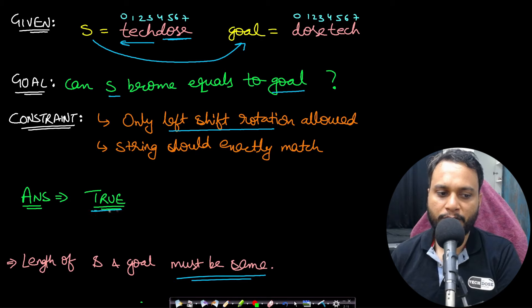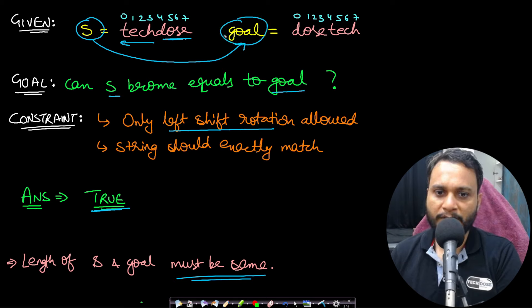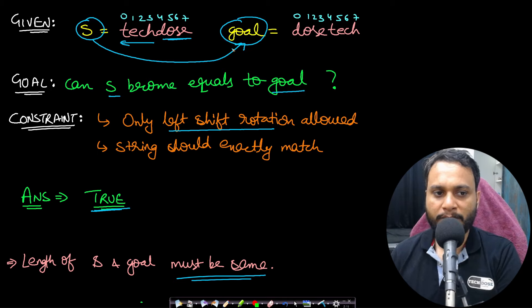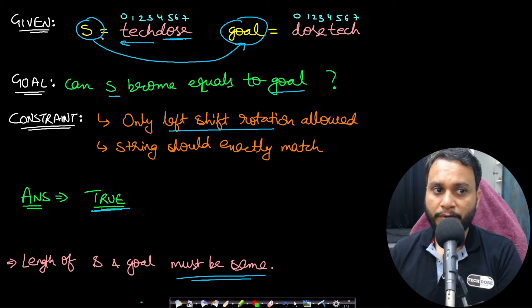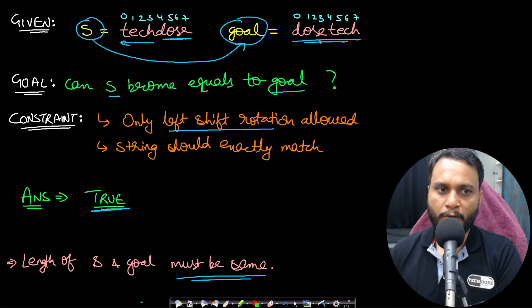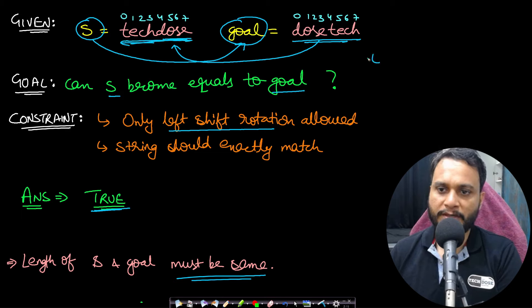We can define a base case: if the length of s and length of goal are not the same, we always return false. Once we know they are the same length, we try left shift operations. If you look at string s and do circular rotations, you can always find goal in the circular rotation if you append s two times.